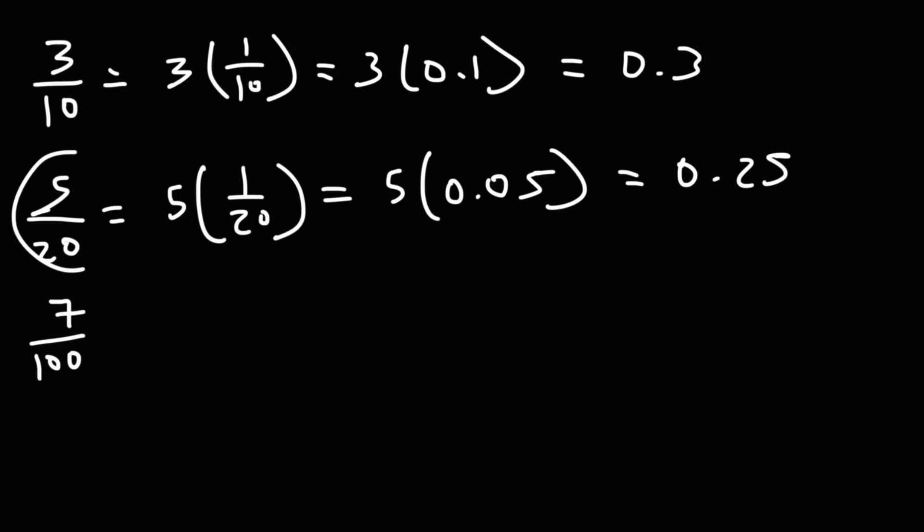Now sometimes you can reduce the fraction. So for that particular problem, it's actually easier to do it this way. 5 is 5 times 1, 20 is 5 times 4. We could cancel a 5. We get 1 fourth, which is on the list, and that's 0.25. So it's good to check to see if you could reduce the fraction before you convert it to a decimal.